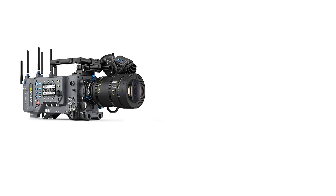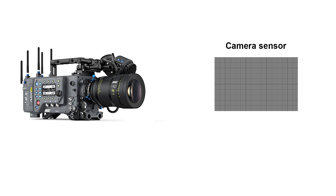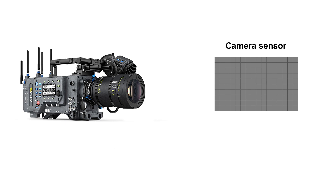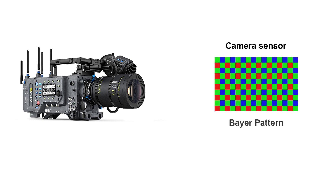Digital camera sensors consist of an array of millions of light sensitive elements called photocytes, that convert the light exposed to the sensor into an array of digital intensity values. So far, the camera is just capturing a black and white image — brighter or less bright. To capture color, most current digital cameras use a color filter array that yields a single primary color value, such as red, green or blue, at each photocyte location.